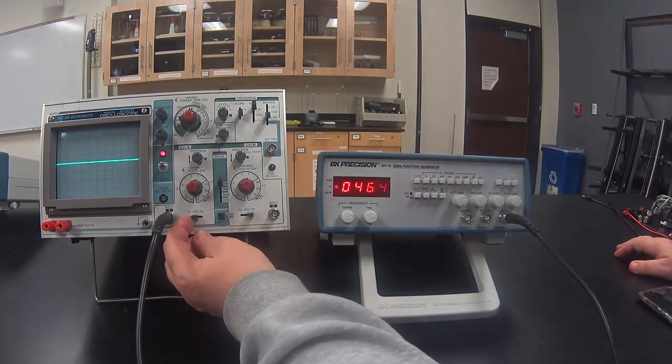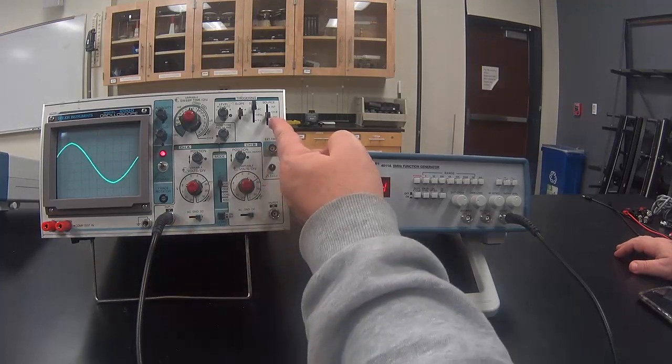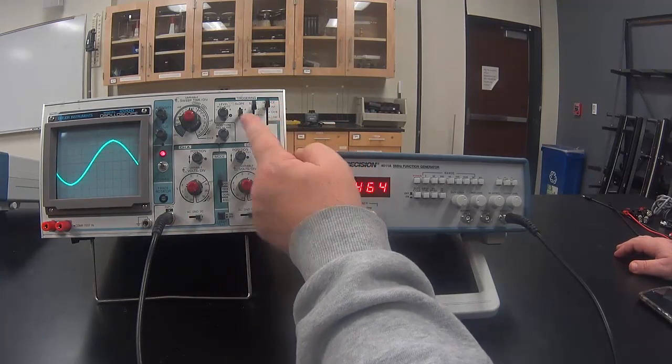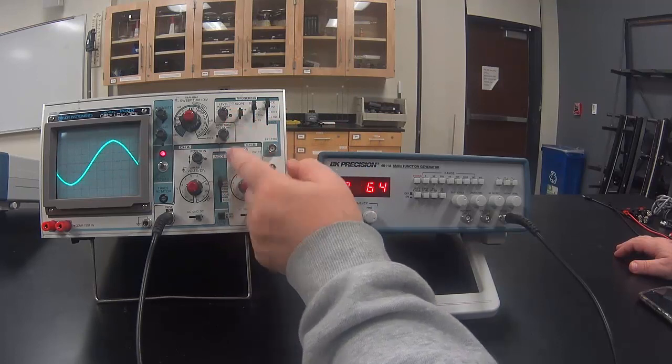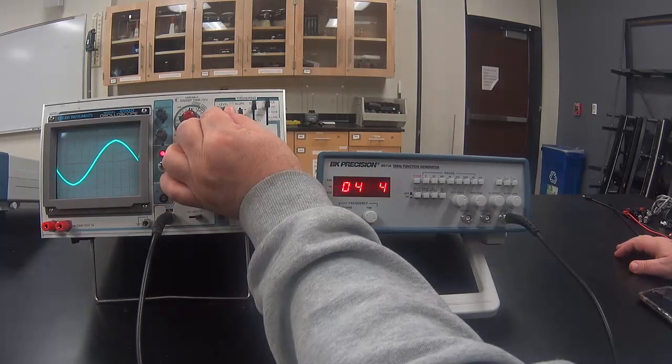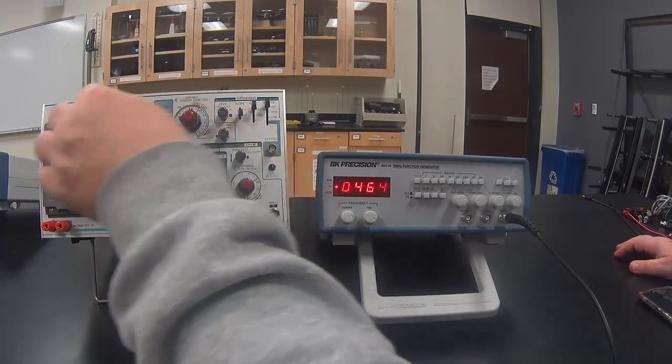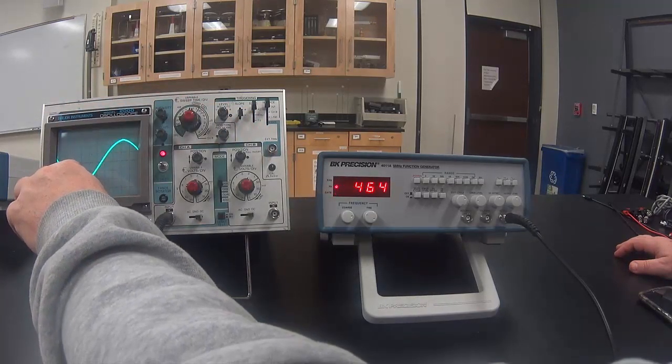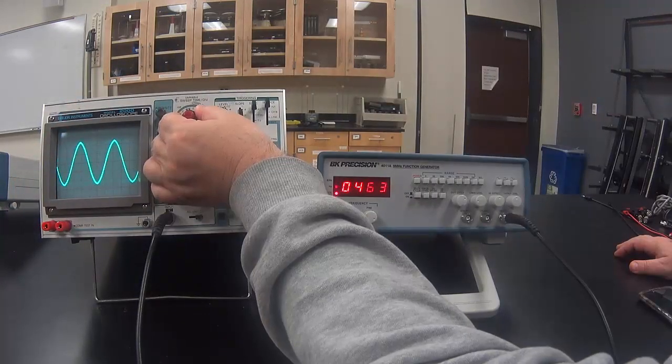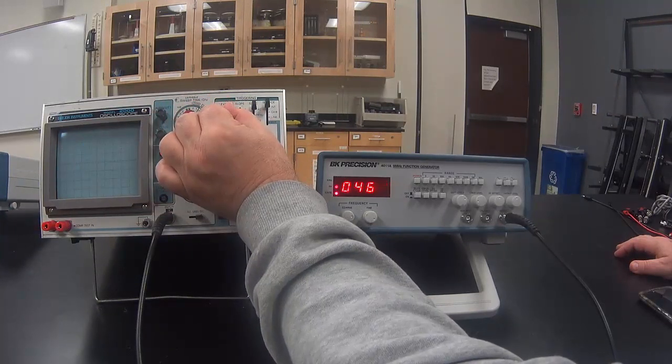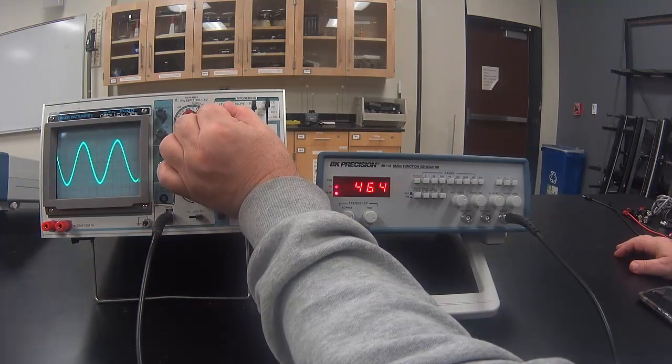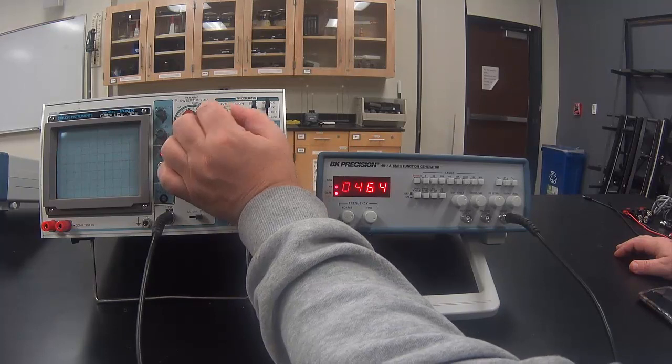Then I can put it back on DC, back on internal, and if I need to adjust the trigger, the trigger level. The trigger level tells it at what voltage to start drawing the picture and I can adjust the trigger level to some convenient spot. If I adjust the trigger outside the range of voltages of the signal, the signal disappears.